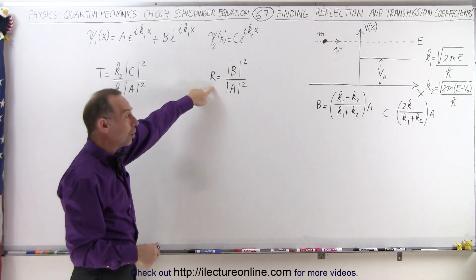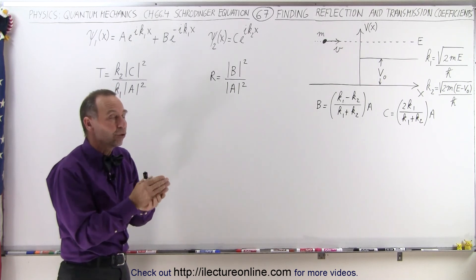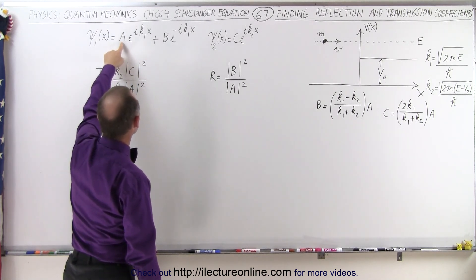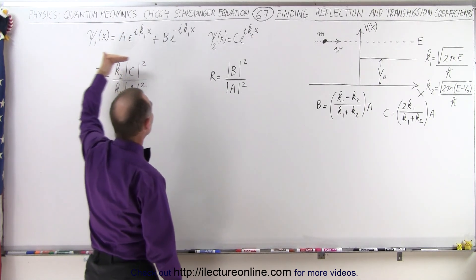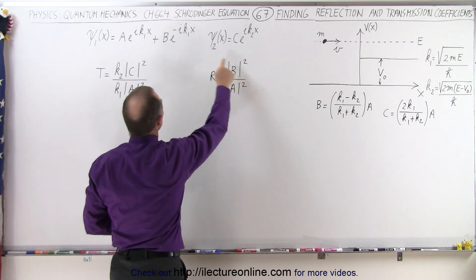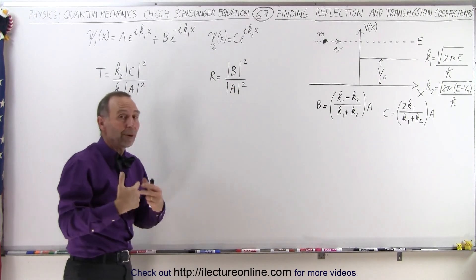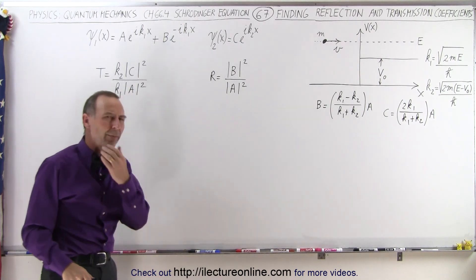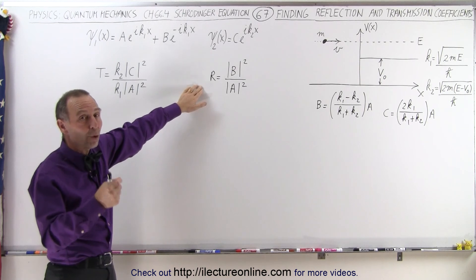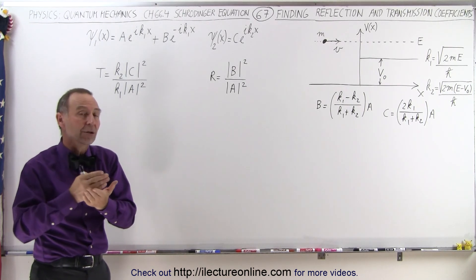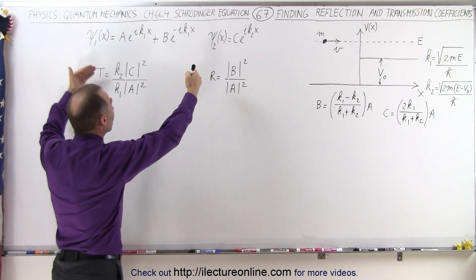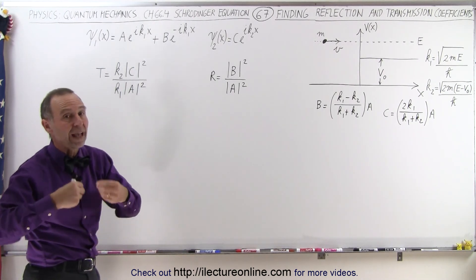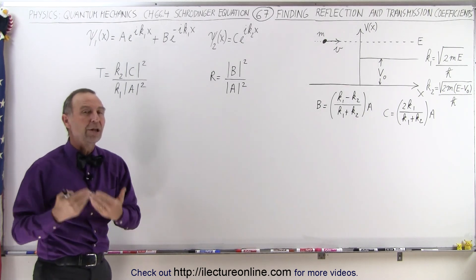How do we find that? R, the reflection coefficient, has to be a ratio of B squared over A squared. A squared is the constant in front of the term that represents all the particles moving to the right in region 1. B is the constant representing all the particles moving to the left in region 1. It's B squared over A squared because the probability of finding a particle depends upon the wave function squared — it's a ratio of probabilities, not wave functions.